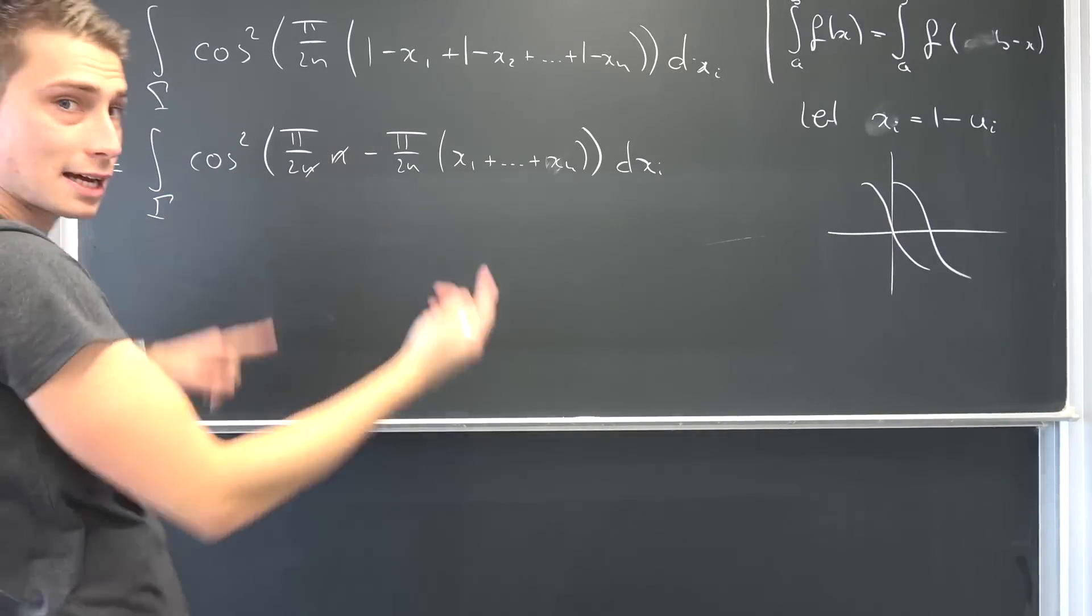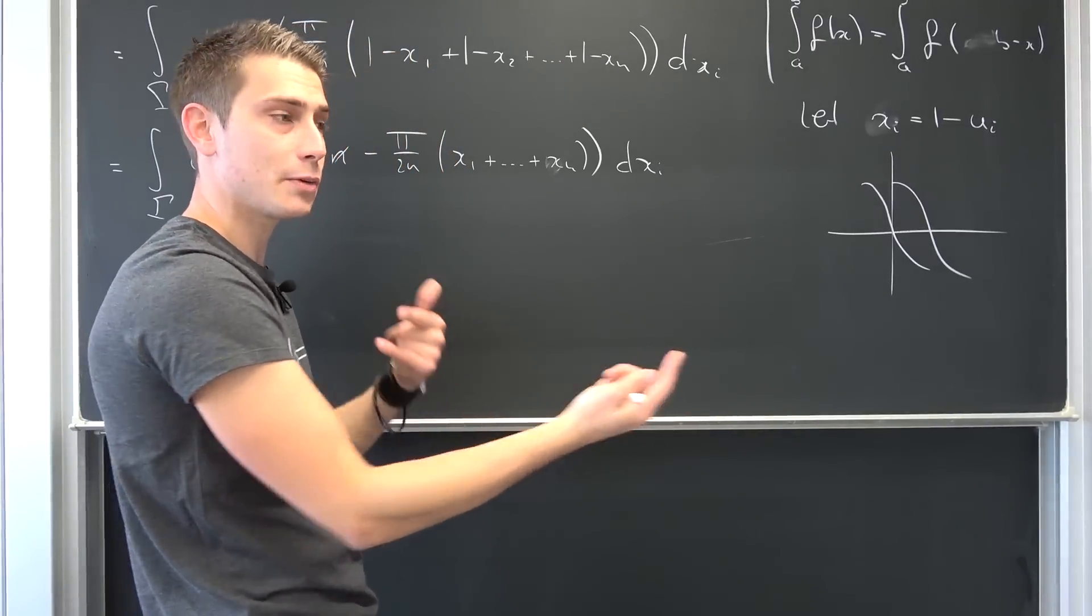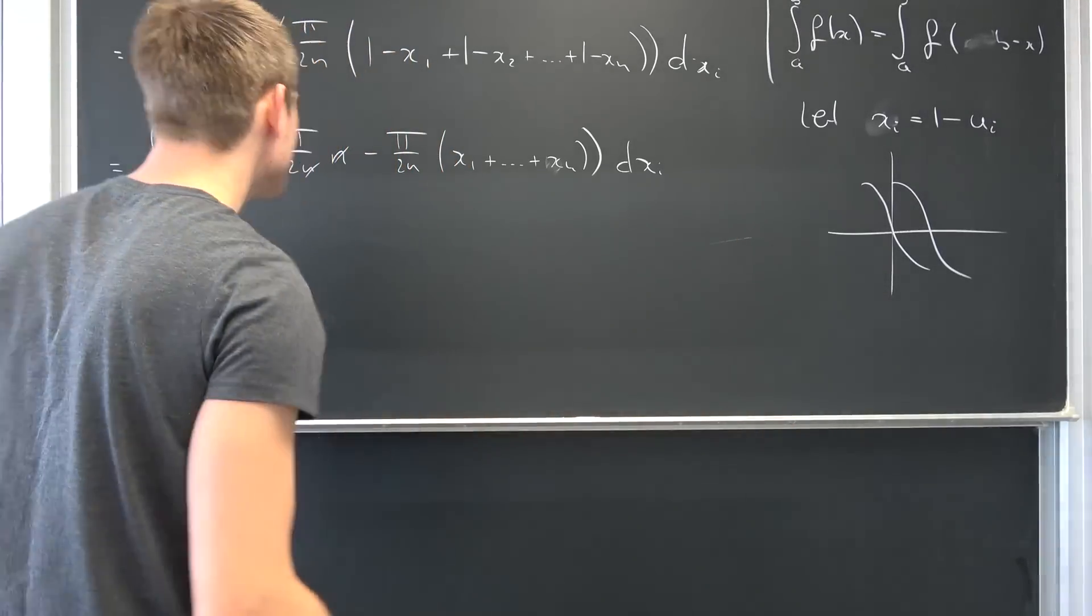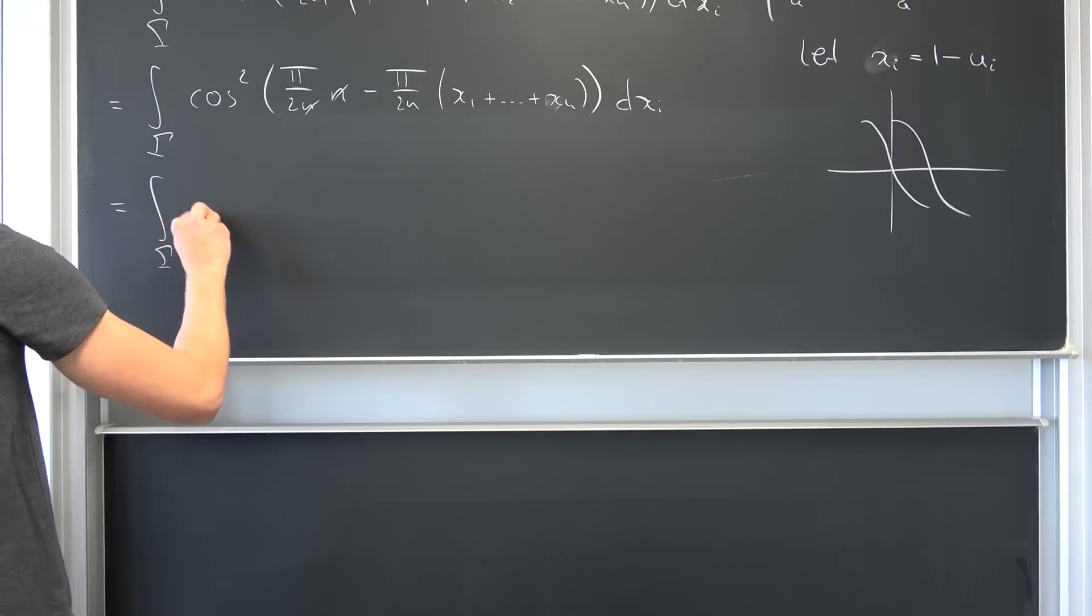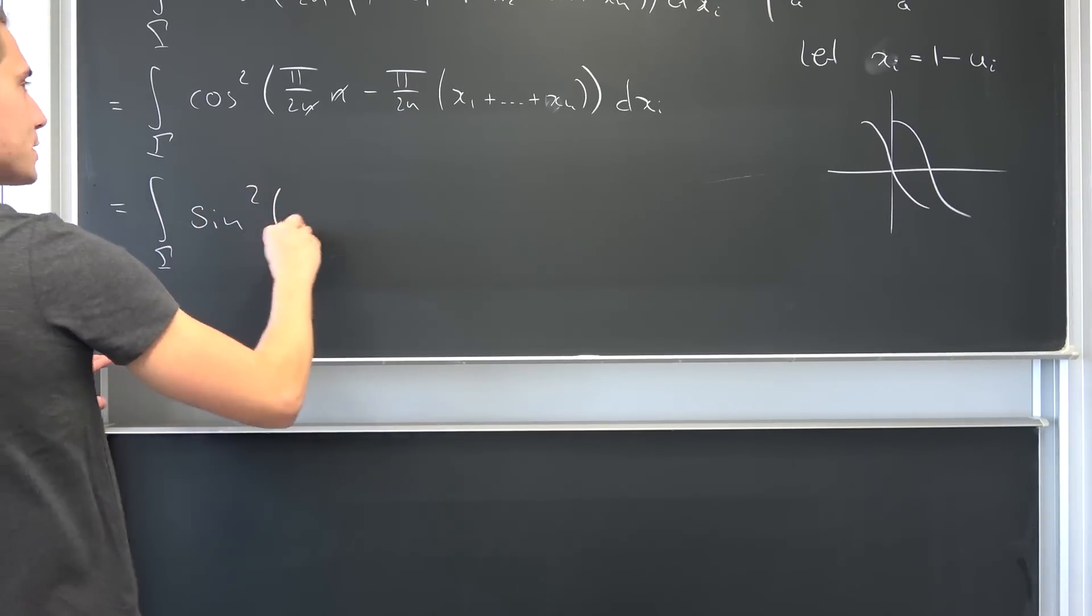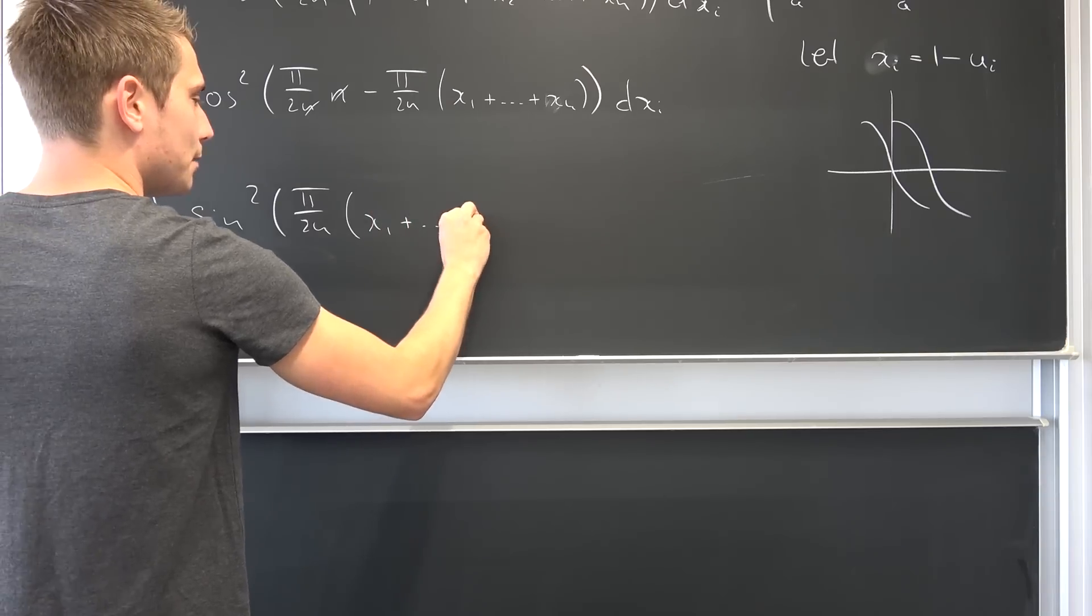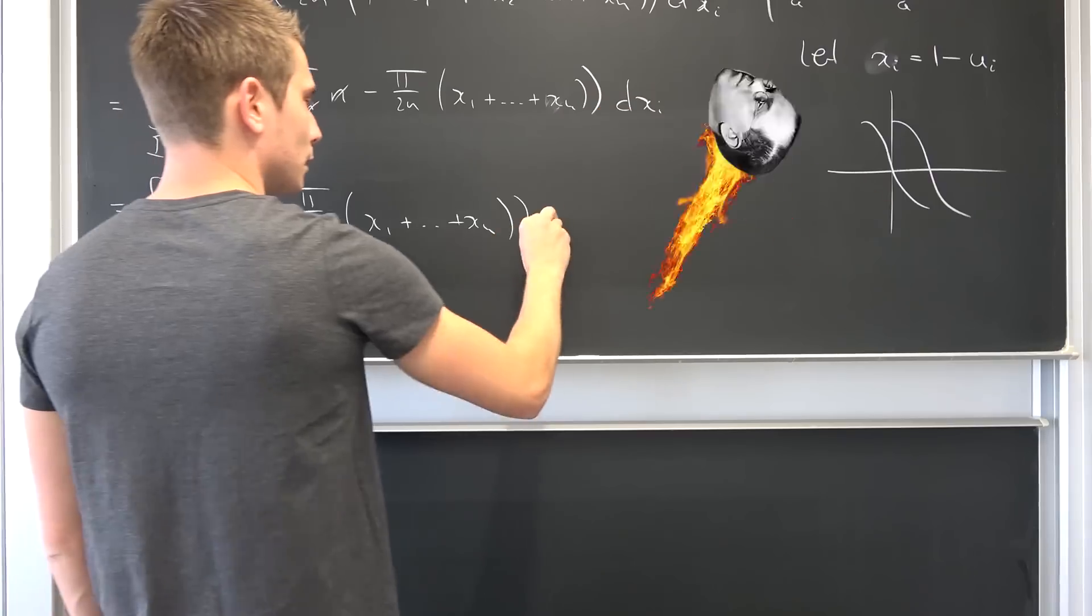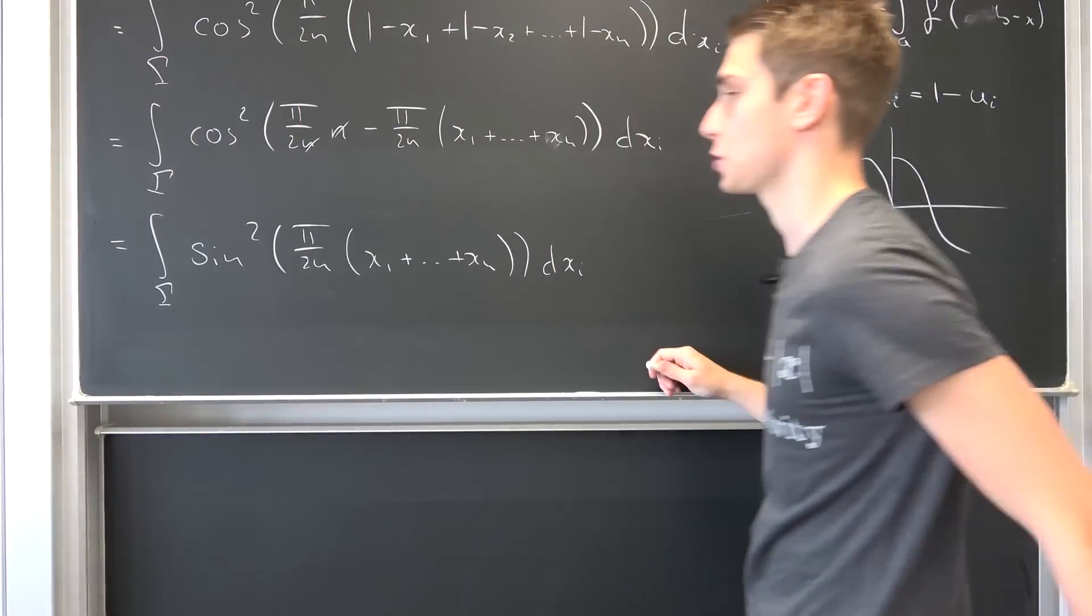But we have the sine squared. Sine is an odd function. So sine of negative x is negative sine of x. Meaning we can bring negative 1 to the outside, square it and get rid of the negative sign. Meaning this overall is nothing other than the integral of sine squared, pi over 2n times x1 plus dot dot dot up until xn of all those xi's in differential form.